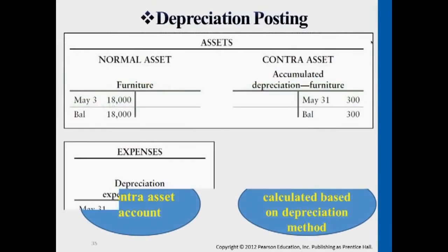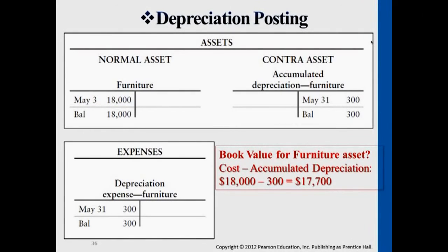So you will see on financial statements, under the T-accounts, furniture is listed at the original historical cost. Then you will see a separate account listed next to it — typically below it — showing the value of the asset that is no longer useful. The Contra Asset Account, accumulated depreciation, is a deduction account for furniture. Whenever you see any dollar amount under accumulated depreciation, that means the company has owned and used the asset for some time, and the real value of the asset right now is only $17,700.